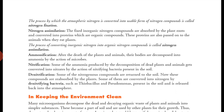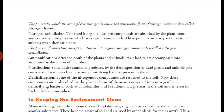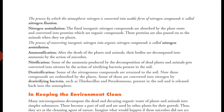The second step is nitrogen assimilation. The fixed inorganic nitrogen compounds — ammonia and nitrates — are absorbed by the plant roots and converted into proteins, which are organic compounds. Humans and animals cannot eat nitrates and ammonia directly, but they can eat proteins obtained from plants. So fixed inorganic nitrogen compounds are absorbed by plant roots and converted into proteins.